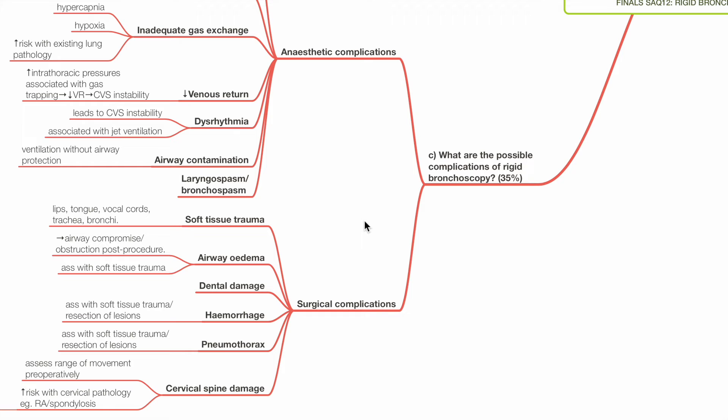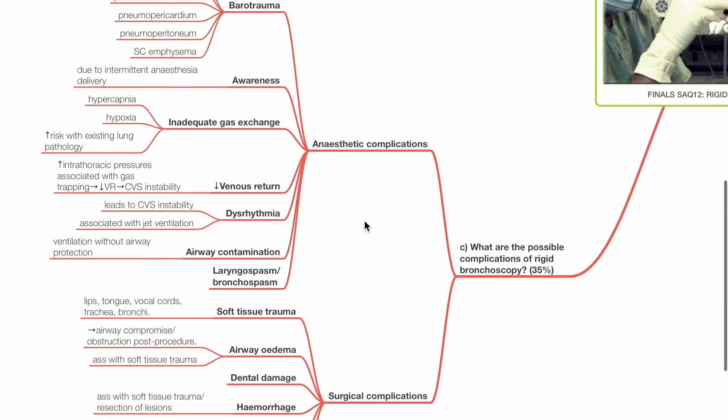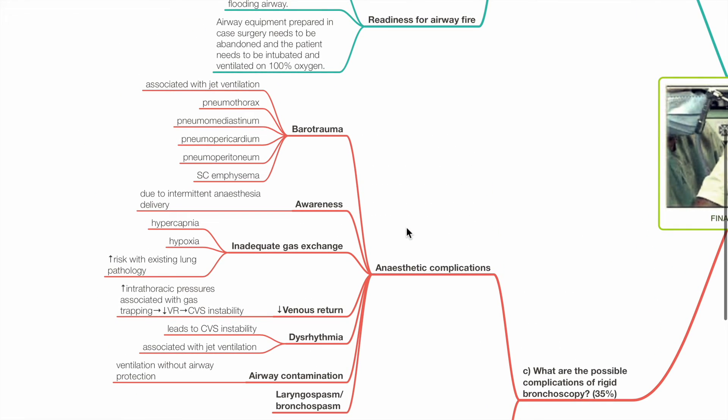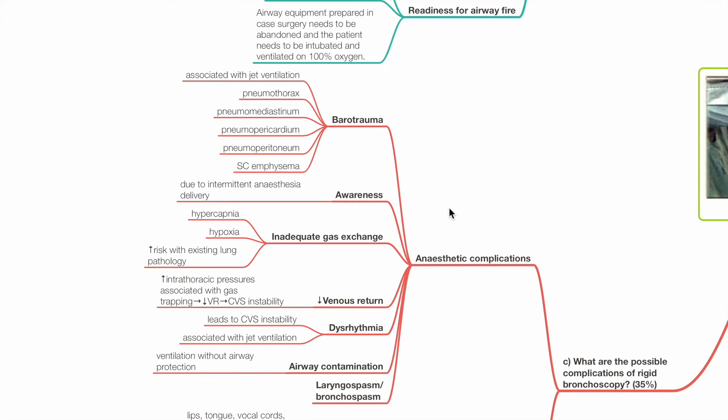What are the possible complications of rigid bronchoscopy? Complications may be divided into those due to anesthesia and surgery. Anesthetic complications include barotrauma associated with jet ventilation. Barotrauma may lead to pneumothorax, pneumomediastinum, pneumopericardium, pneumoperitoneum, and subcutaneous emphysema.